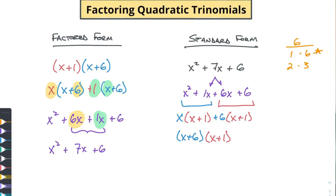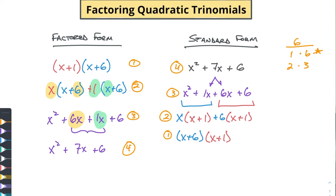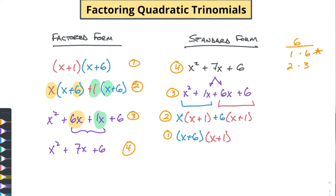Look at that — we got right back to where we started. These two binomials are flipped around but that doesn't matter, because two times three is the same as three times two. The order doesn't matter when you're multiplying two things together. What's happening here is our first, second, third, and fourth steps going one way correspond exactly to the first, second, third, and fourth steps going the other way — we haven't done anything different, we're just working backwards through the same process in the opposite order.